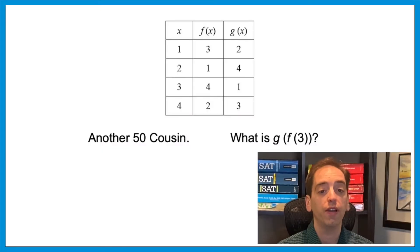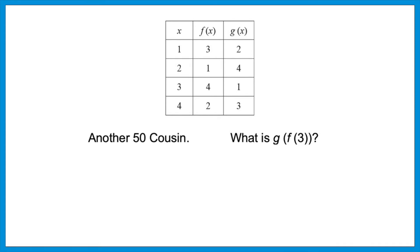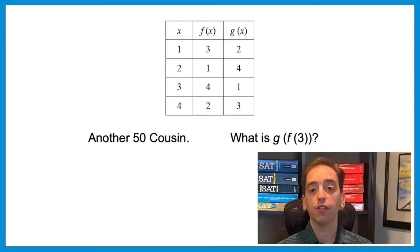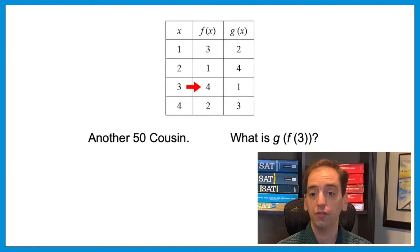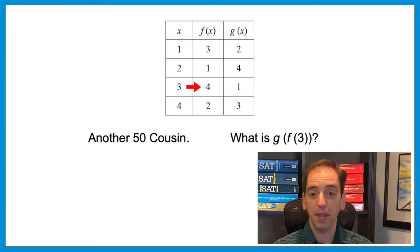If a question gives you a function within a function, you start inside and work your way out. The answer to the innermost function gets plugged into the next function. Let's try another: what is g(f(3))? Start inside with f(3) — plugging in 3 for x in the f function gives an f(x) value of 4, so f(3) = 4. Now plug that into g: g(4) means go to where x is 4 and read the g(x) value. The answer is 3.